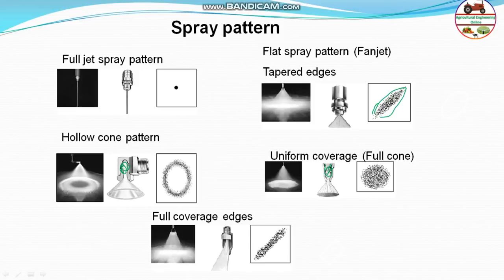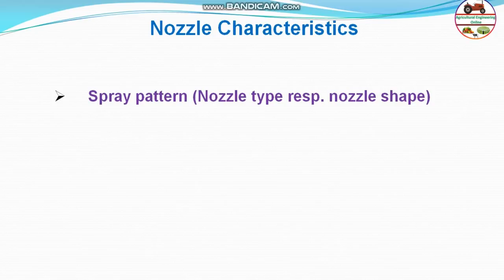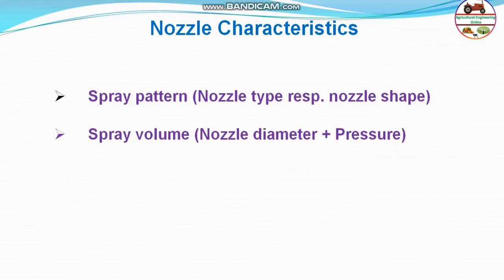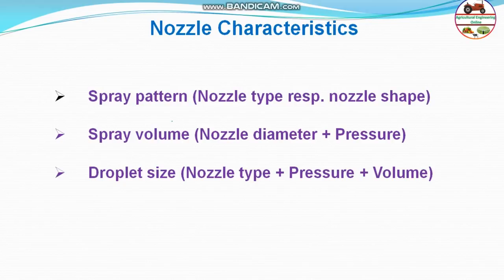Next are nozzle characteristics. The spray pattern depends on nozzle shape; the orifice shape determines the spray pattern. Spray volume is characterized by nozzle diameter and pressure — higher pressure gives higher volume and larger diameter gives more discharge. Droplet size depends on a combination of nozzle type, pressure, and volume — all three contribute to determining droplet size.